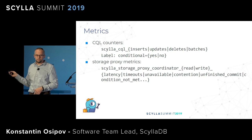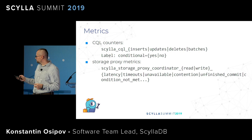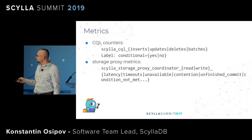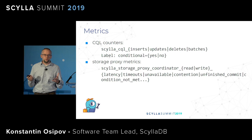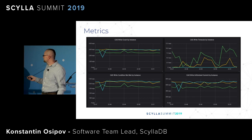We added metrics to help monitor usage of lightweight transactions — these will soon appear on our standard Grafana dashboards. There are histograms and counters for the coordinator covering latency spikes, timeouts, unavailable errors, contention errors, unfinished commits, and conditions not met — the last meaning you're supplying changes that aren't applied and probably doing some useless work. This is a screenshot of metrics going up and down during our stress-testing of the cluster.